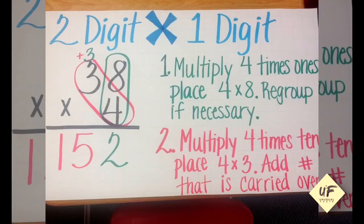Step two: multiply four times the tens place—four times three. Add the number that is carried over. So four times eight is 32, and four times three is 12. Now add it all up: 152.